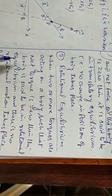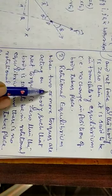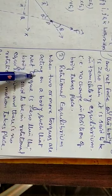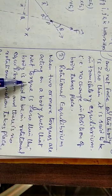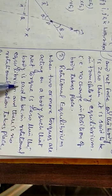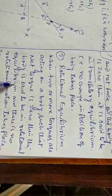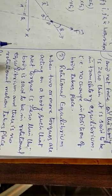The other type is the rotational equilibrium. If two or more torques are acting on the body such that the net torque is zero, then the body is said to be in rotational equilibrium, and there is no rotational motion taking place.